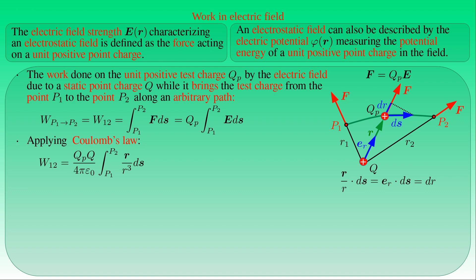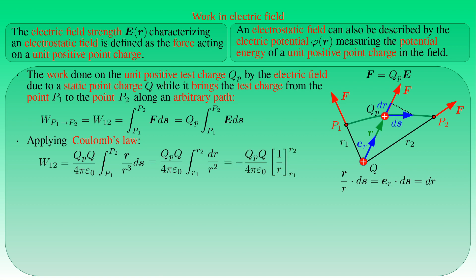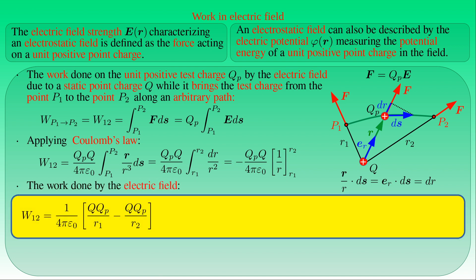We have transformed the line integral into an integral with respect to the length of the position vector R. The work done by the electric field can be written as Q times QP over 4π times ε₀, times the integral of 1 over R squared with respect to R from R1 to R2, which are the distances of points P1 and P2 from the point charge Q. Performing the integration, we obtain the primitive function minus 1 over R evaluated at R1 and R2, giving the work as 1 over 4π ε₀ times the difference between Q·QP/R1 and Q·QP/R2.